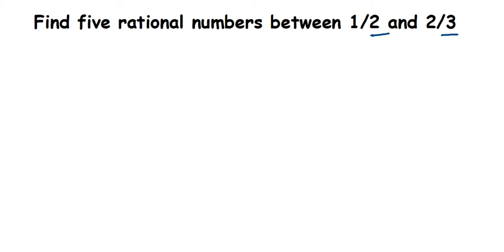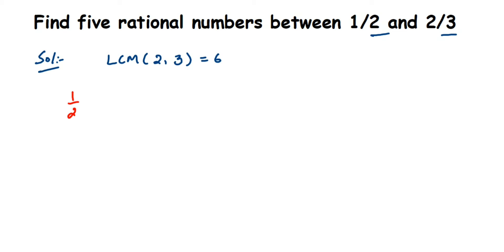When you solve this, the denominators have to be the same. Here we have 2 and 3, which are not the same, so we're going to make them the same by taking the LCM of 2 and 3. Whenever we're finding rational numbers between two rational numbers, we have to make sure the denominators are the same, and we can do that using LCM.